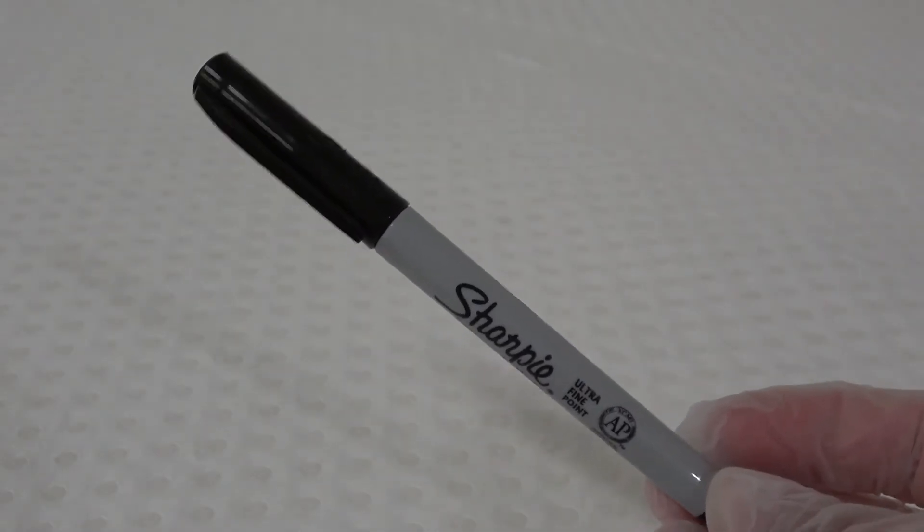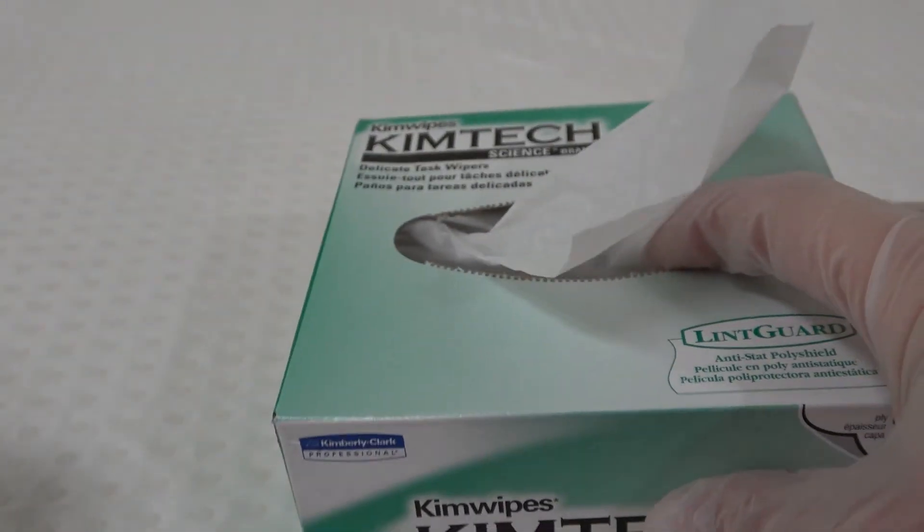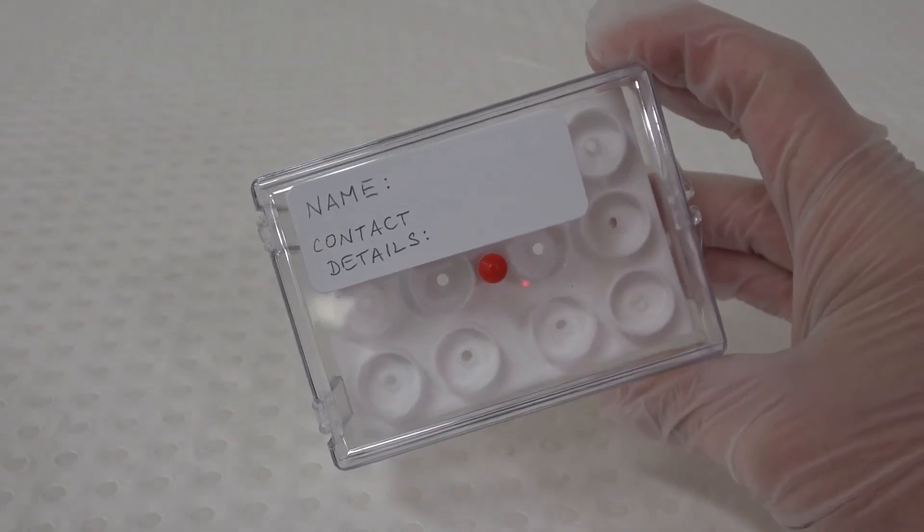A small spatula. A fine permanent marker. Gloves. Foil or low lint lab tissue. And a SEM sample storage box.